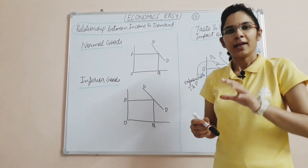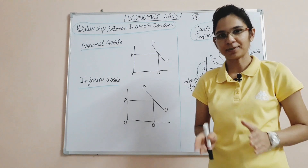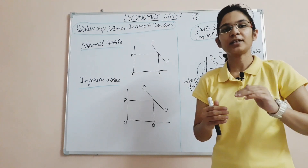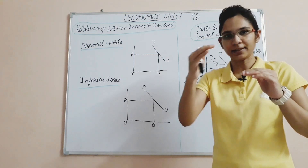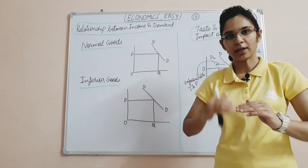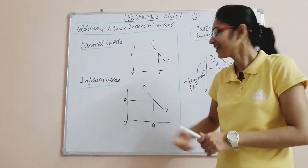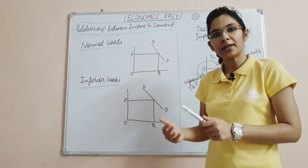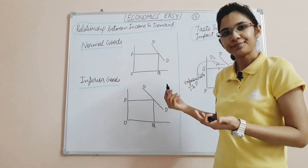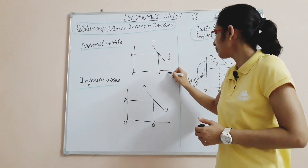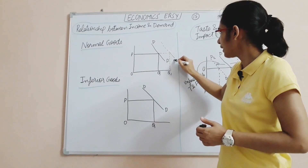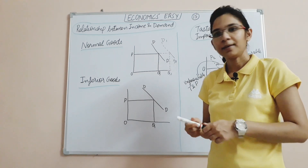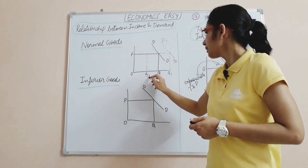Now let's see the relationship between income and demand. We know there are normal goods and inferior goods. For normal goods: as income increases — say from 500 to 1000 rupees — the consumer will increase consumption of the commodity, and demand shifts to D1. As income decreases, the demand for normal goods decreases, shifting to D2. This is because with less money, you consume less.